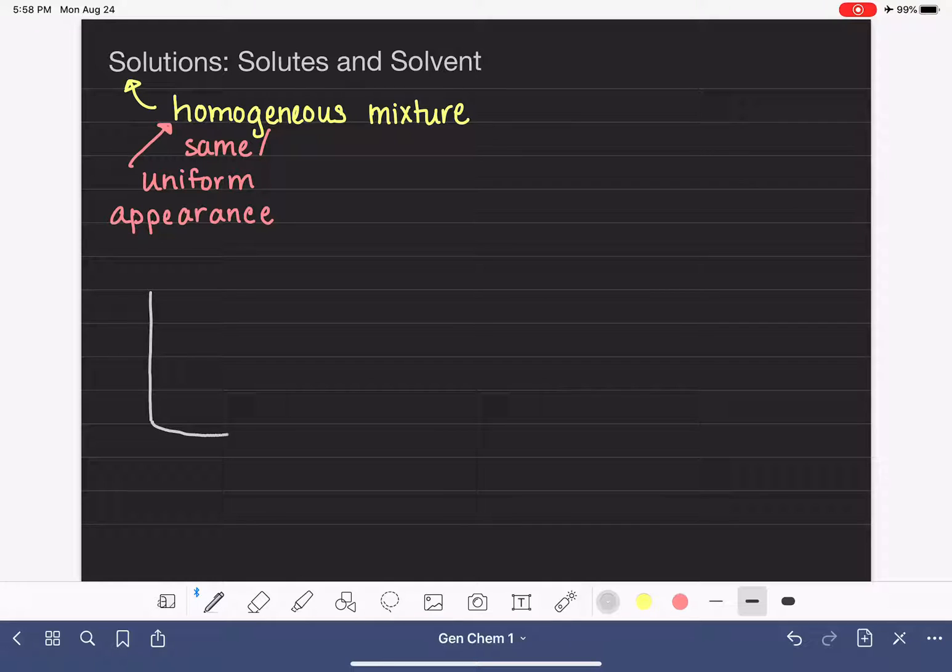Let me give you an example of homogeneous. This is a glass of Kool-Aid. And when we look at this glass of Kool-Aid, we cannot see the individual components of the Kool-Aid.